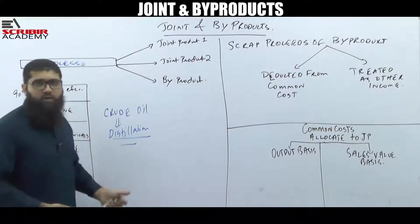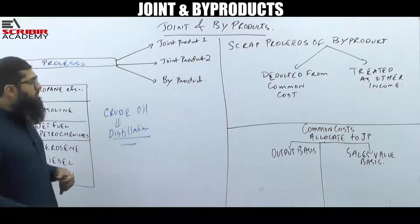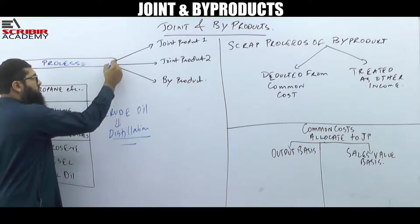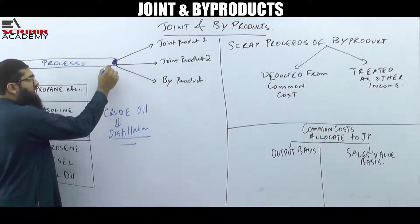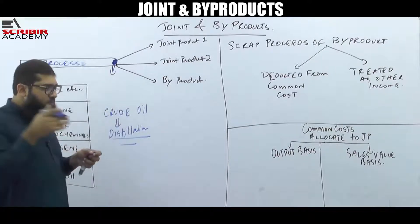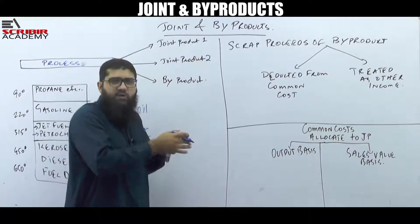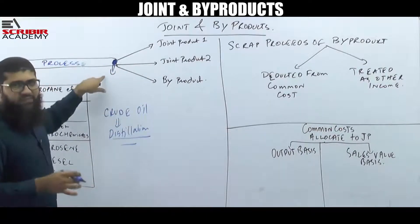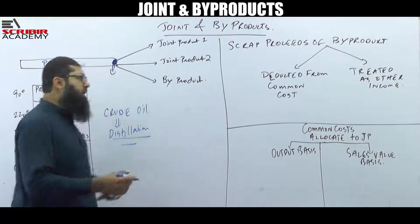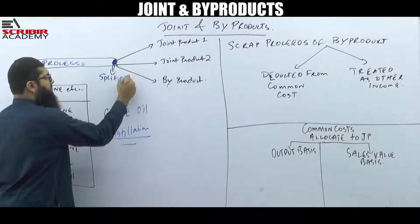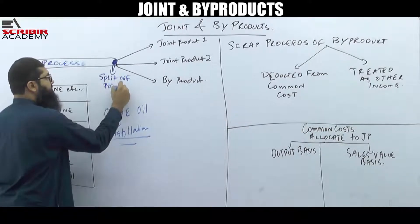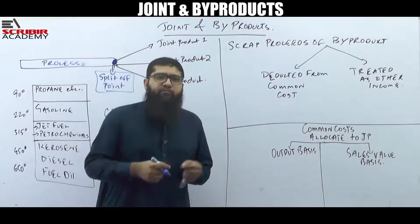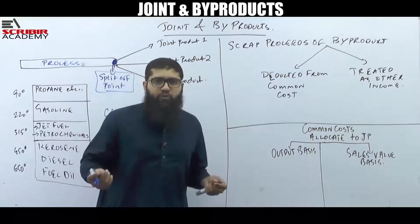What do we mean by joint product 1, joint product 2, and byproduct? Basically, what happens is there is a manufacturing process going on, and at one point in time, the single input into the process is split into multiple products. This specific point at which the single product is split into multiple products is termed as the split-off point. Once the split-off point is reached, we end up getting joint products and byproducts.